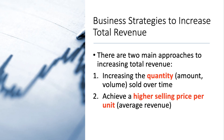If you're looking to increase revenue, there are essentially two main approaches to grow your revenue - to grow the top line of a business. The first is simply to sell more stuff, to increase the quantity or the volume that you sell over time. The other approach is to achieve a higher selling price per unit - to lift the average revenue from each block of goods or services sold.